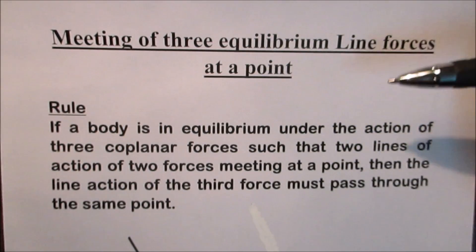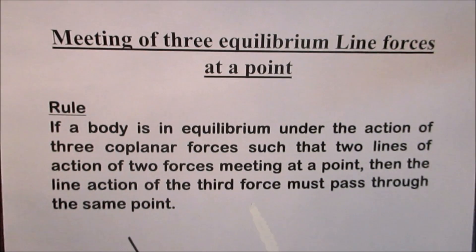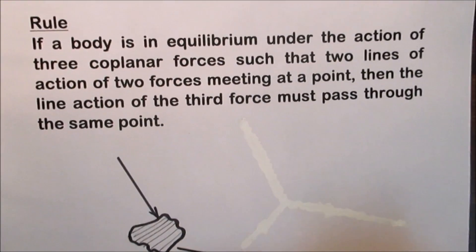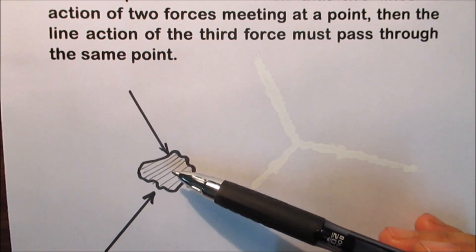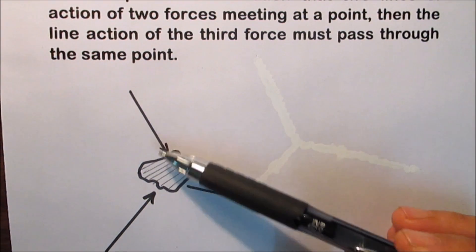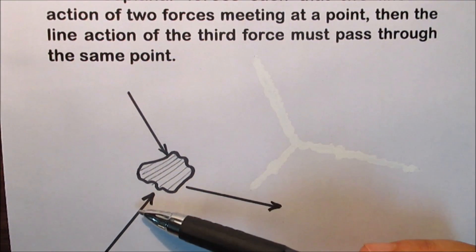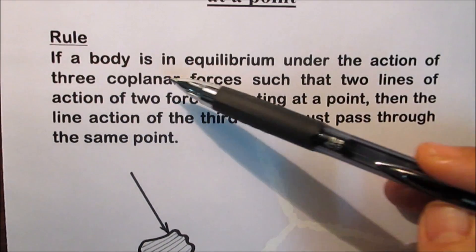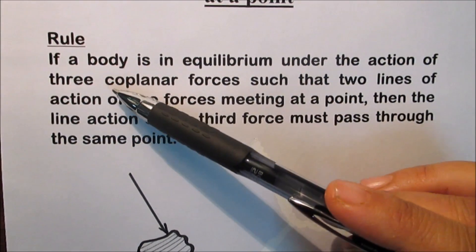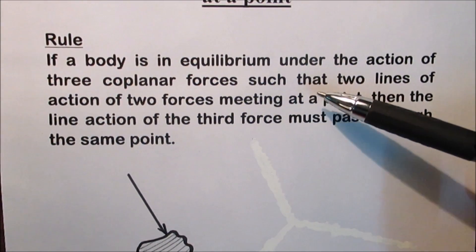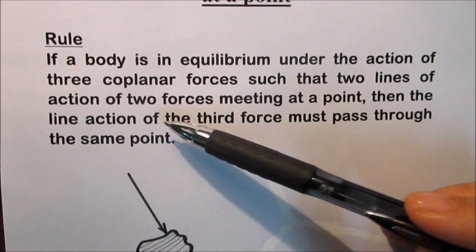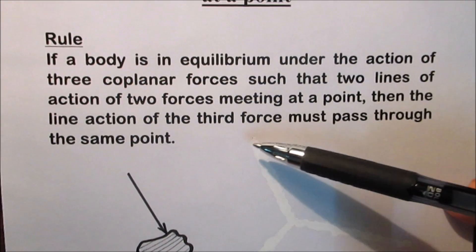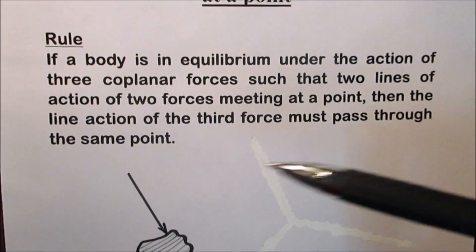Meeting of three equilibrium line forces at a point — important rule. Here we have a body in equilibrium under the action of three forces. If two forces meet at a point, then by the rule, the third force has to pass through the same point. So, if a body is in equilibrium under the action of three coplanar forces such that two lines of action of two forces meet at a point, then the line of action of the third force must pass through the same point.